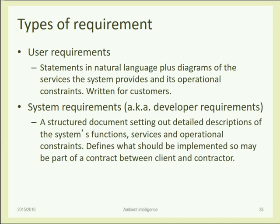In the user requirements I can describe what functionality the system will provide and what kind of characteristics the user interface will have, but I won't specify the programming languages, the libraries, the file locations, or other more specific details. But these more specific details are also important, because we want to constrain and make some design choices during the process. There is some information not directly useful for the end user but nevertheless important for the specification. We call this developer or system requirements.